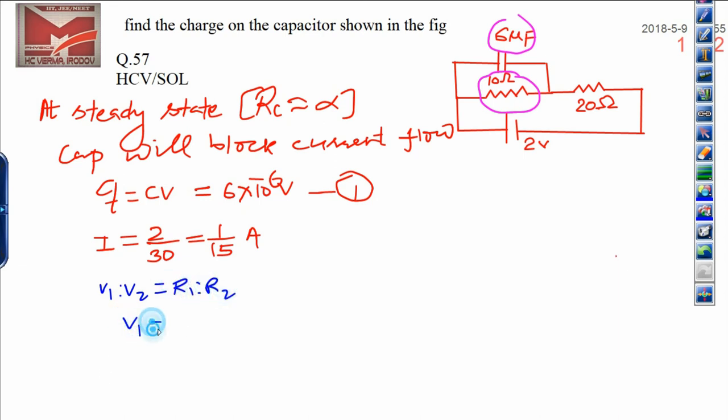Then V₁ can be written as total voltage times R₁ divided by R₁ plus R₂. By this way you can calculate the voltage or potential across a series combination.